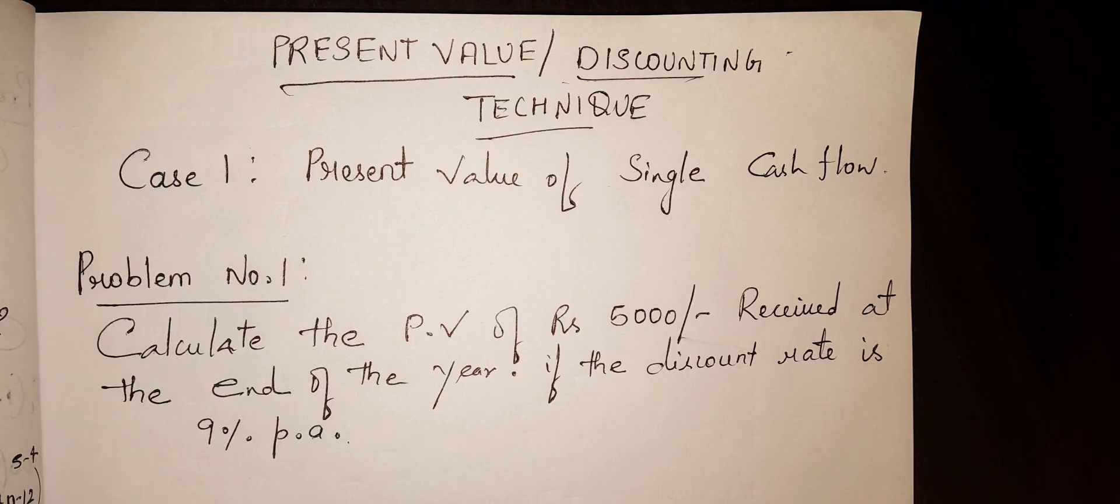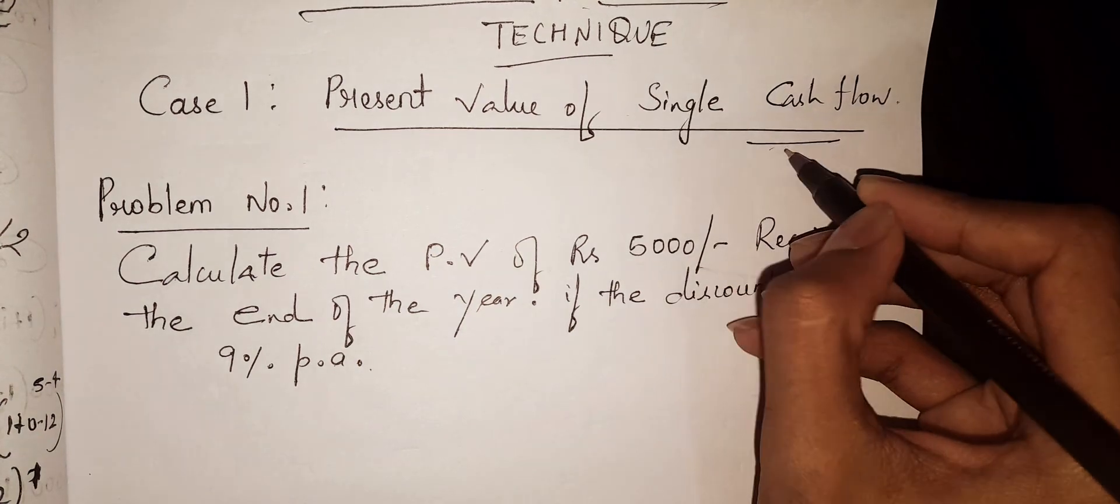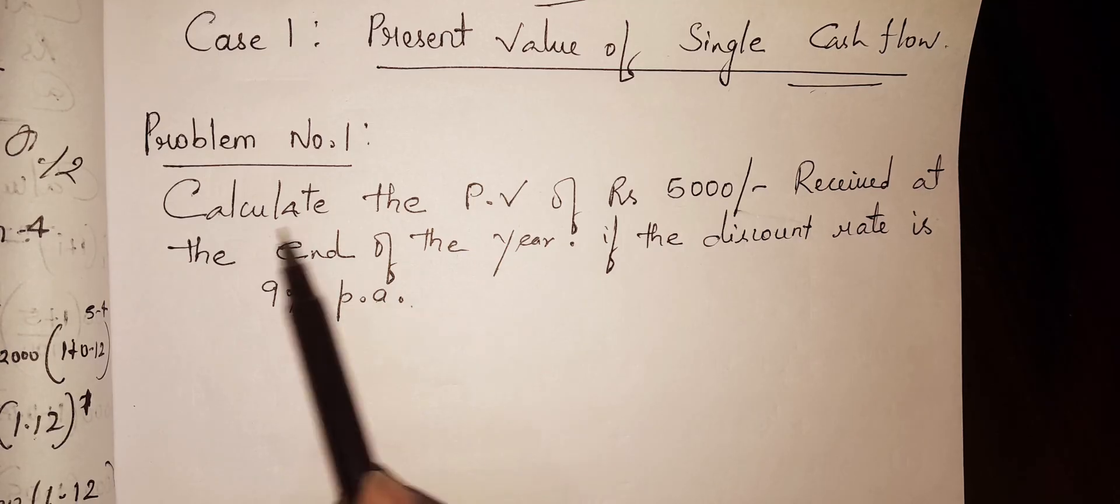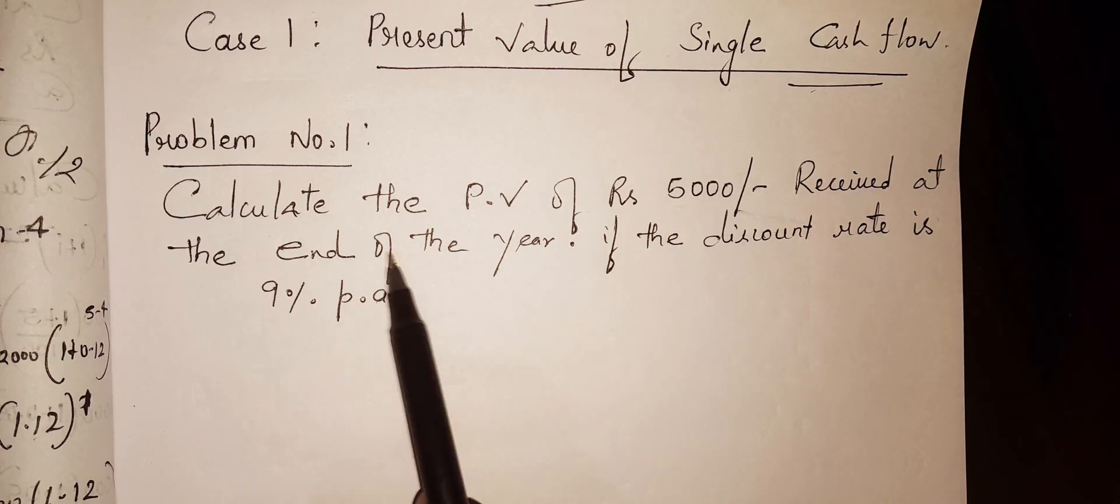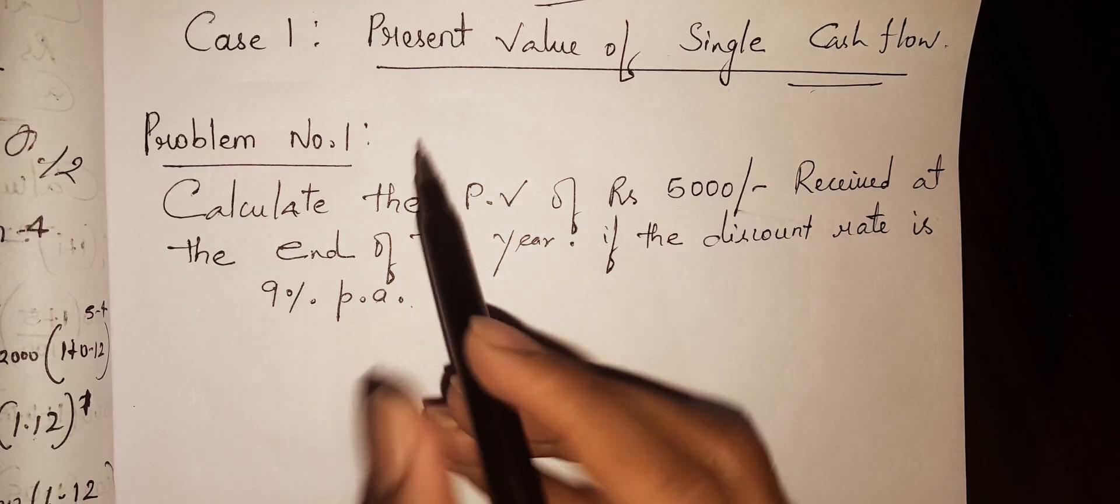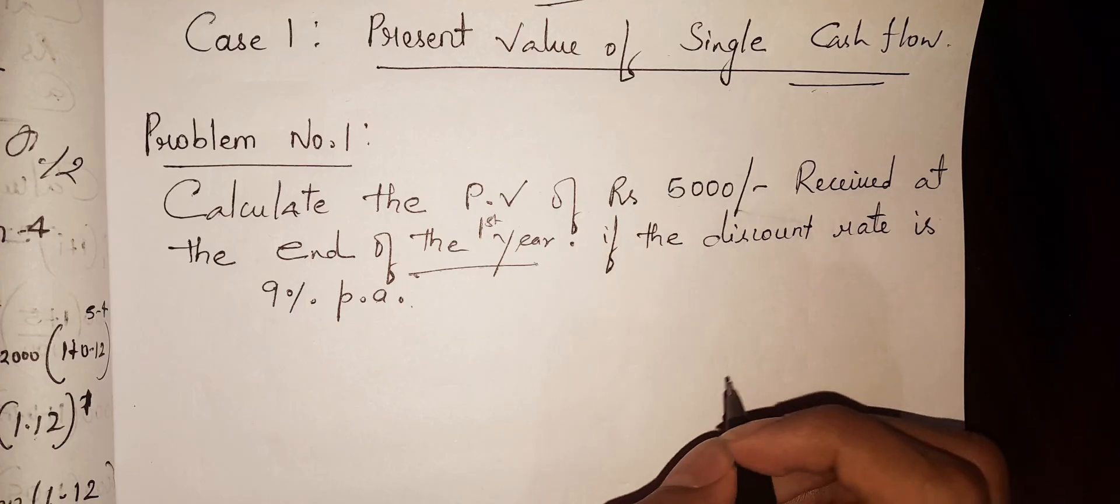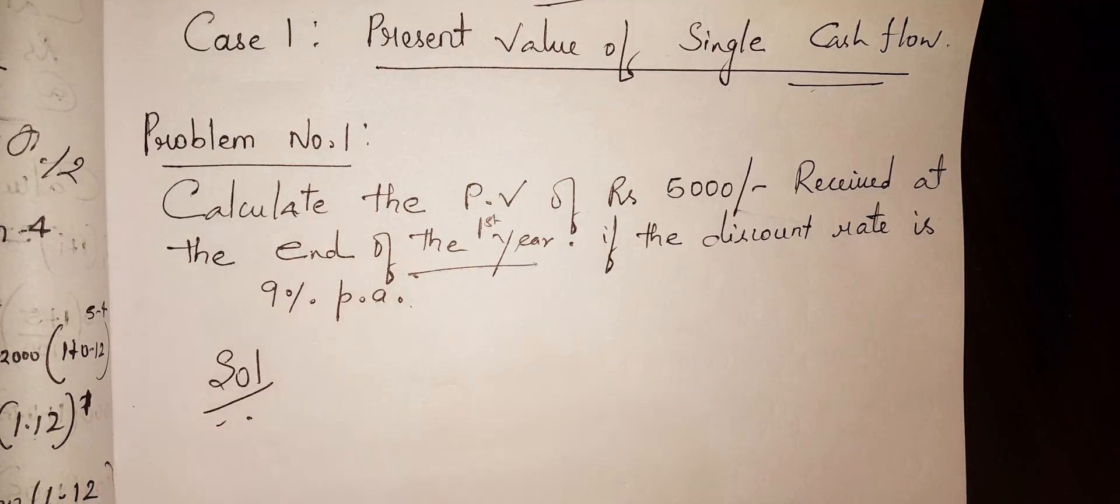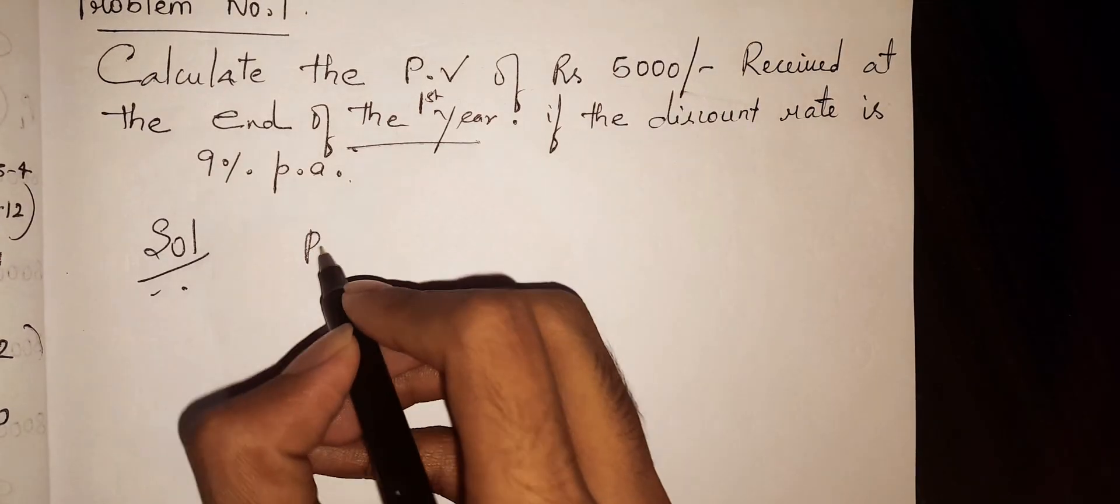We'll solve all three cases. First, let us solve case number one: present value of single cash flow, which means only one time investment. Problem: Calculate the present value of 5,000 rupees received at the end of the first year if the discount rate is 9% per annum. Now let us solve this. The formula to find the present value is